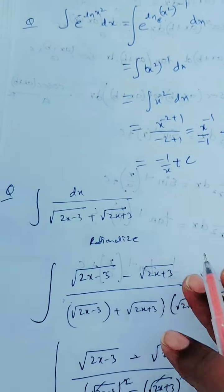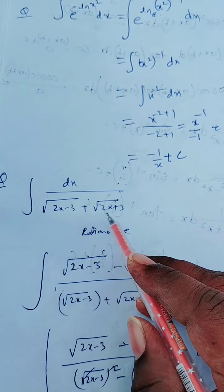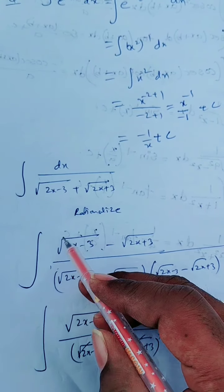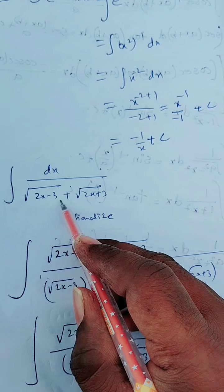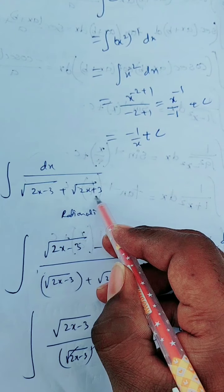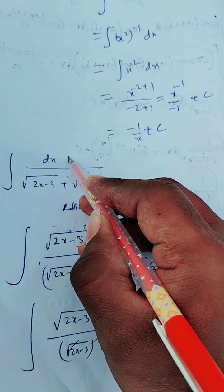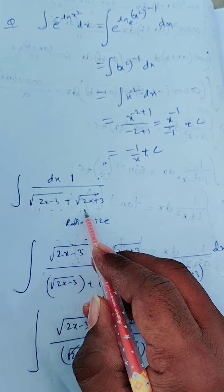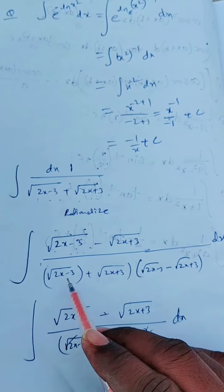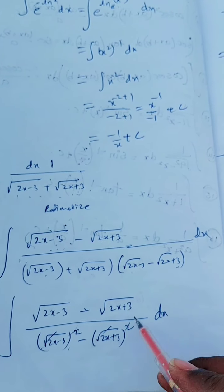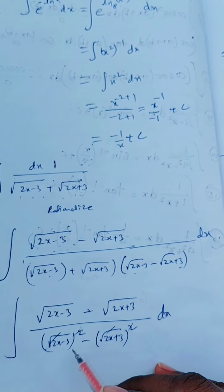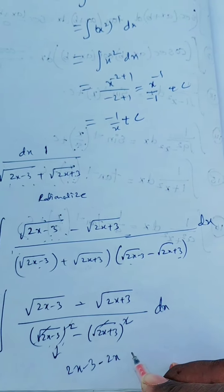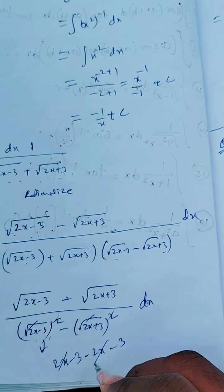Now find integration of dx upon under root of 2x minus 3 plus under root of 2x plus 3. Whenever you have this form, rationalize. Multiply numerator and denominator by under root of 2x minus 3 minus under root of 2x plus 3. The numerator becomes under root of 2x minus 3 minus under root of 2x plus 3. In the denominator, using a plus b into a minus b equals a square minus b square, the square roots cancel giving 2x minus 3 minus 2x minus 3, and 2x minus 2x cancels, leaving minus 6.